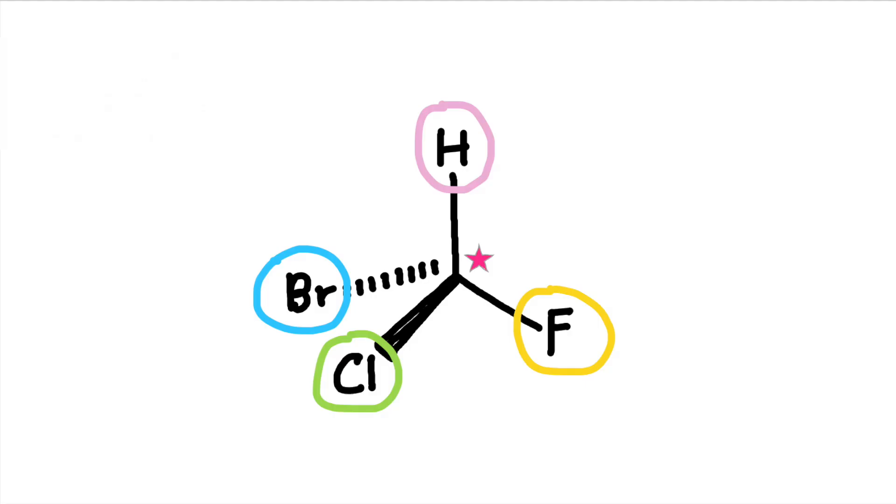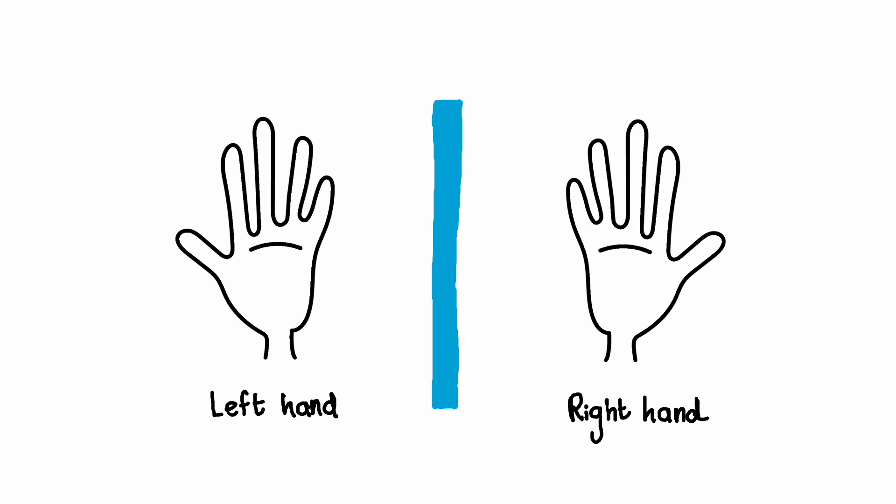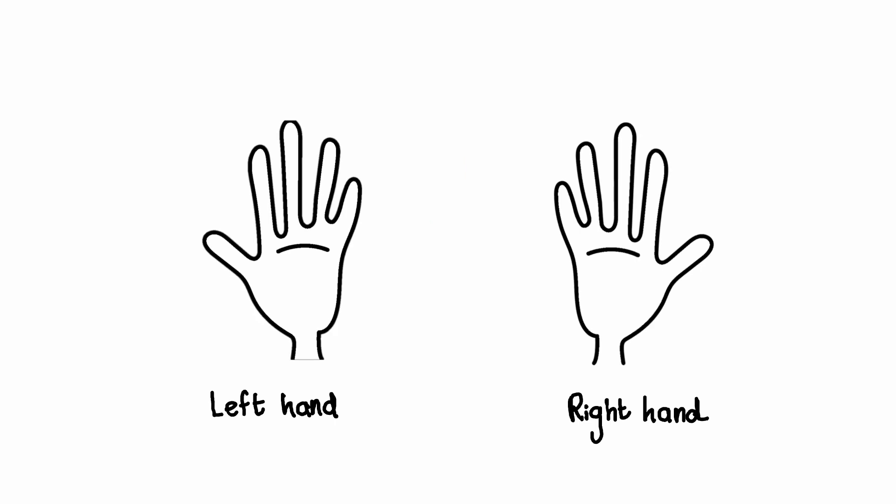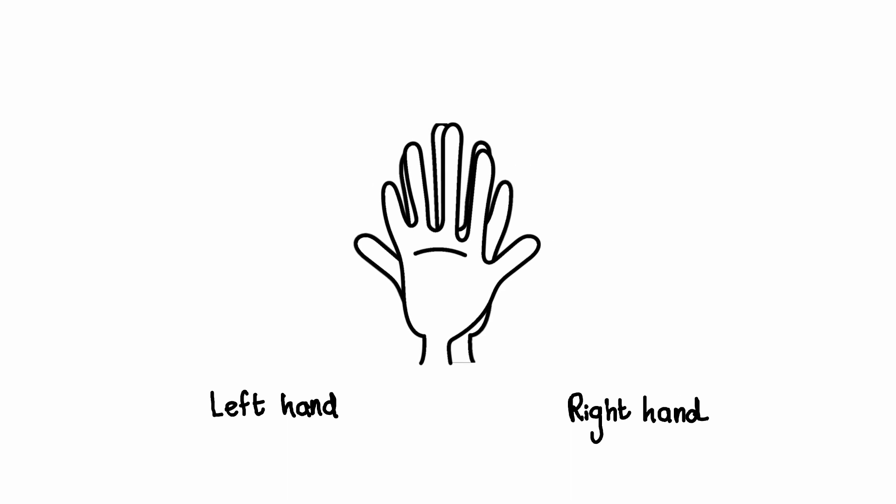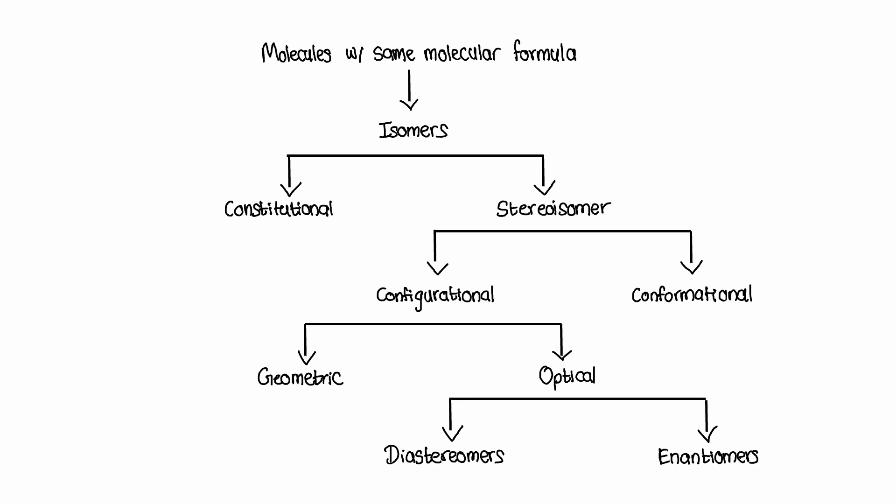In other words, chiral molecules are non-superimposable mirror images of each other, just like our left hand and right hand. They are similar in structure but cannot be perfectly aligned. These non-superimposable mirror images are called enantiomers. Enantiomers are a type of stereoisomer. This means that they are molecules with the same molecular formula and connectivity of atoms but different in their spatial arrangements.